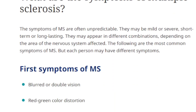The symptoms of multiple sclerosis are often unpredictable. They may be mild to severe, short-term or long-term, and may appear in different combinations depending on the area of the nervous system affected. The following are the most common symptoms of MS, but each person may have different symptoms.